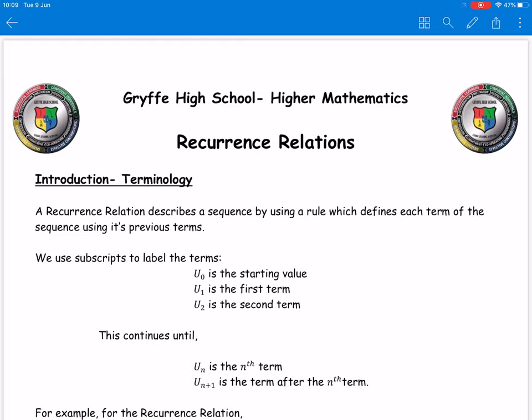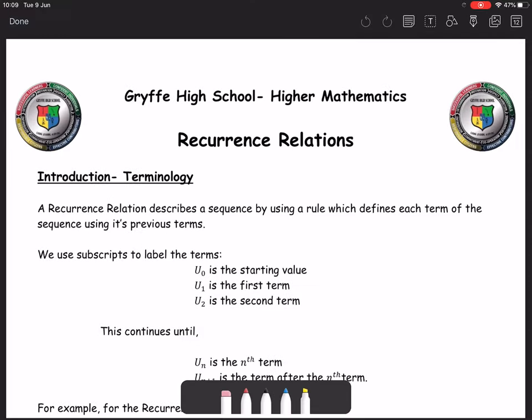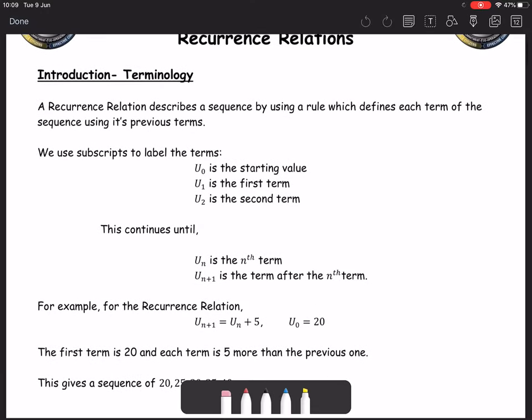We'll look at the terminology to begin with. So what we use to describe our sequences is subscripts. We talk about u₀ as the starting value of the sequence. That can change depending on every single question.